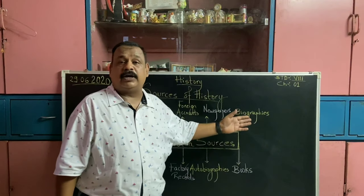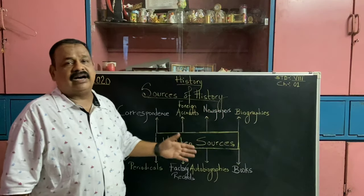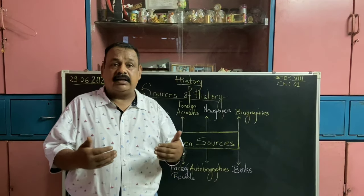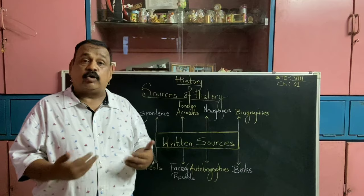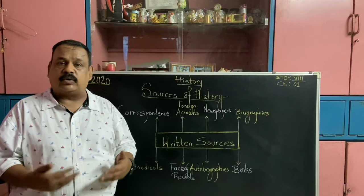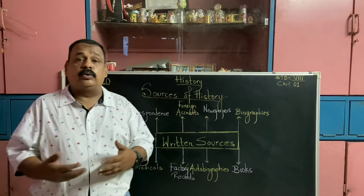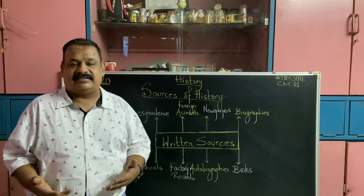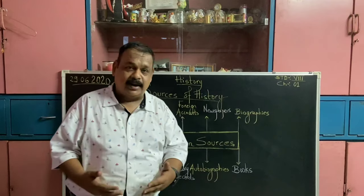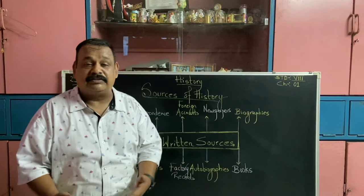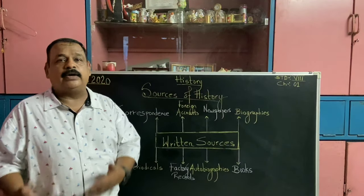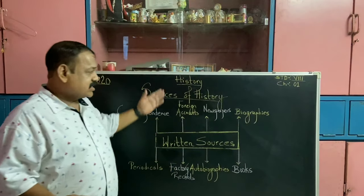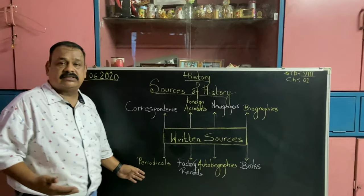Then we come to biographies. You need to understand what biographies are. Biographies are basically when somebody is writing about a person — their lifestyle, their contribution towards the nation and to society. In order to write a biography, a person needs to be really very famous. For example, the recent movie Sanju — it was a biography on whose life? It was on the life of Sanjay Dutt.